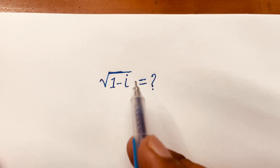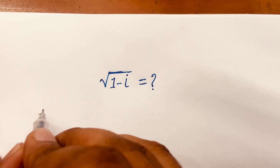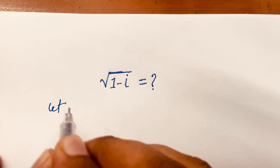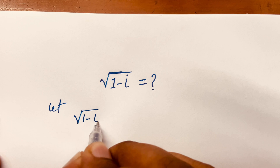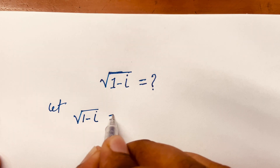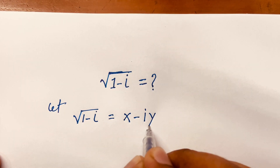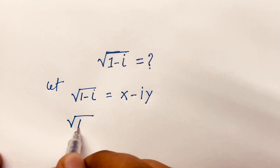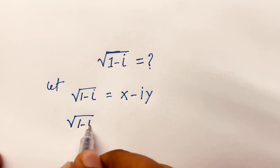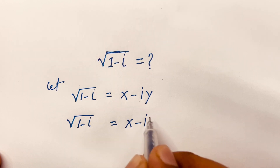How to solve square root of (1 minus i)? If you want to solve this question, first of all, let square root of (1 minus i) equal to x minus i·y. So, square root (1 minus i) is equal to x minus i·y.